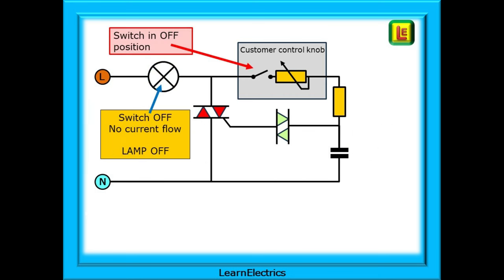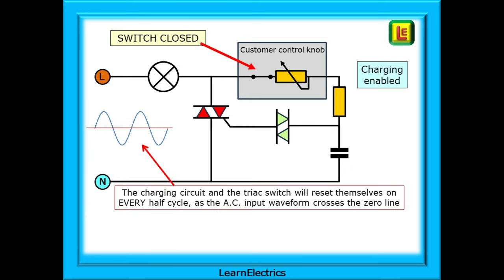With the switch in the off position, no current will flow and the lamp will be off. Close the switch by turning the control knob and the input waveform enters the circuit and charging is enabled as just discussed. The charging circuit and the TRIAC switch will reset themselves on every half cycle, each time that the AC input waveform crosses the zero line.